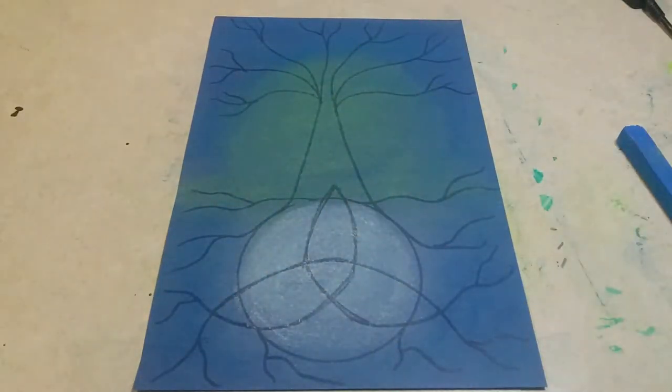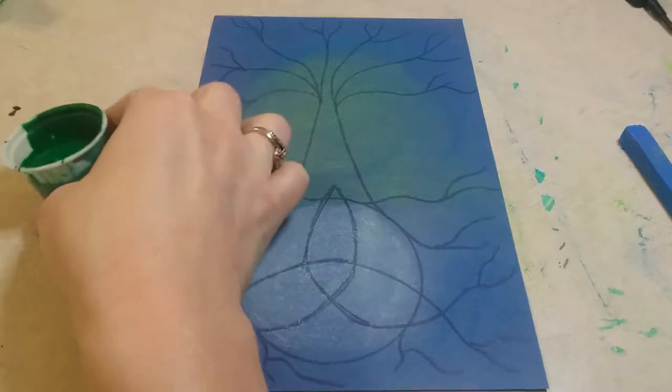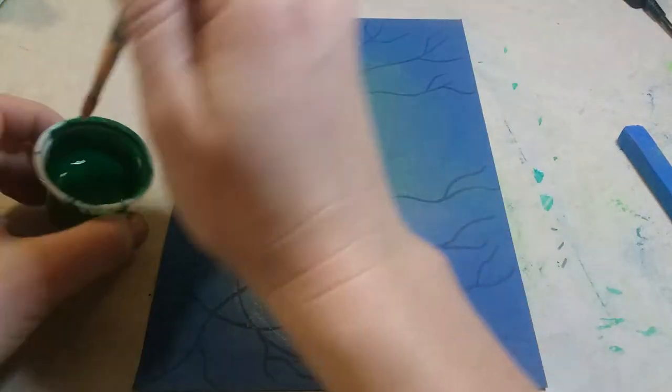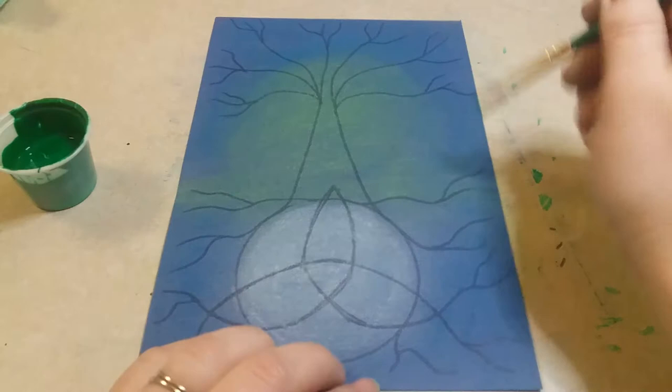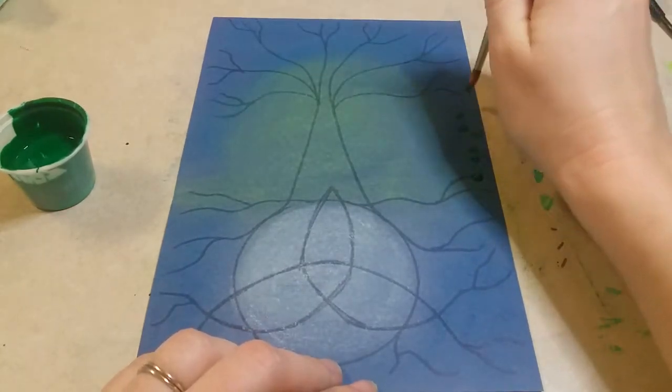To get started we're gonna start with our green paint, and what we're going to do is add in those little leaves. So you're just basically adding dots all around the edges of your paper.